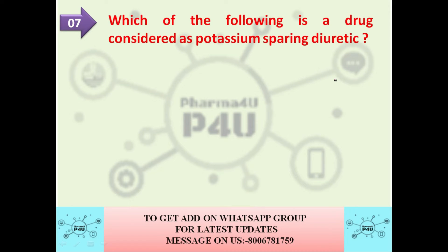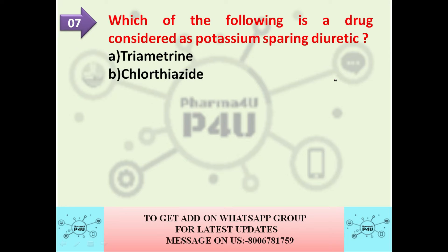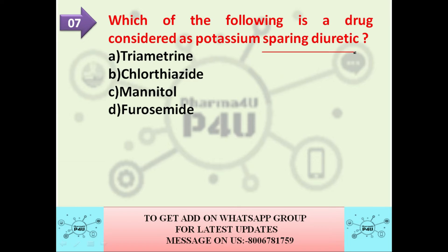The next question is: which of the following is a drug considered a potassium-sparing diuretic? Option A is triamterene, option B is chlorothiazide, option C is mannitol, option D is furosemide. The correct answer is triamterene — triamterene is a potassium-sparing diuretic.